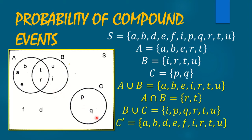For C complement, which means the outcomes that can be found in the given sample space but not found in event C. Event C has outcomes P and Q, so we disregard P and Q. The complement of C is: A, B, D, E, F, I, R, T, U.